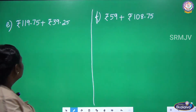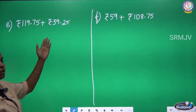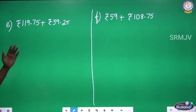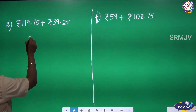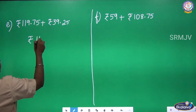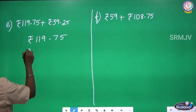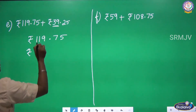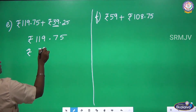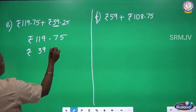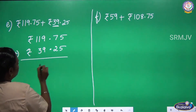Next one: Rupees 119.75 Paise, then 39 Rupees 25 Paise. We have to first arrange it in the column, then we can add. Write Rupees 119, 75 Paise. Next, for 39 Rupees — here only 2 digits are given — near the tens place write 3, near the ones place write 9, then dot, then 25 Paise. Write the Plus symbol and now we can add.